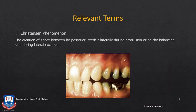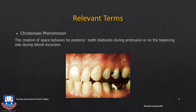Christensen's phenomenon is the creation of space between the posterior teeth bilaterally during protrusion or lateral excursions — the anterior teeth prevent contact of the posterior teeth during protrusion, and the canine prevents contact of the posterior teeth during lateral excursion. This is called anterior protection, whereby the anterior teeth protect the posterior teeth during excursive movements and during centric relationship or maximum intercuspation the posterior teeth protect the anterior teeth. As mentioned, this is confined to the natural dentition.